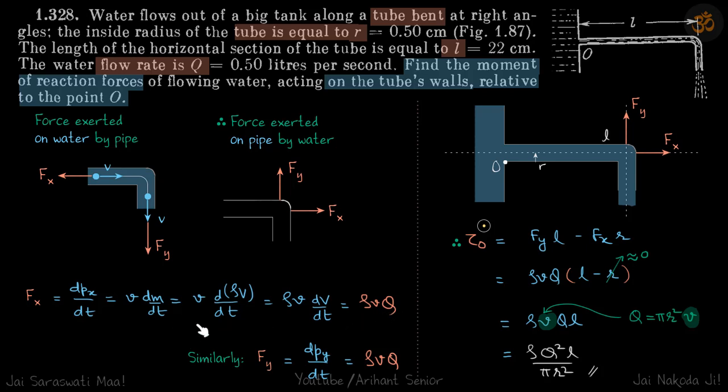Similarly, same equations in y direction. We'll get Fy equals dPy by dt. So again Py is M into V, just like here. Following the same process, rho is constant and comes out, giving us dV by dt. Whatever is the volume flow rate here, same volume flow rate is downwards. So this also becomes rho V into Q.